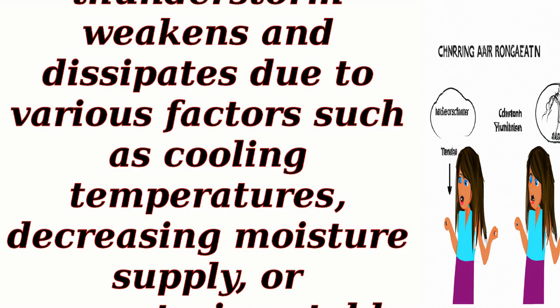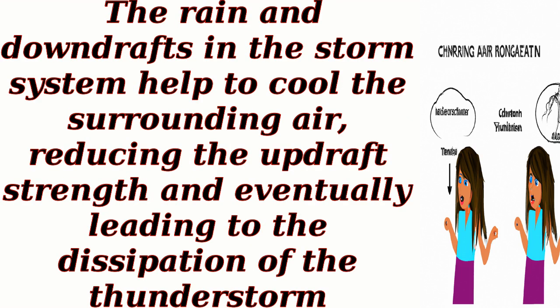Dissipation. Eventually, a thunderstorm weakens and dissipates due to various factors such as cooling temperatures, decreasing moisture supply, or encountering stable atmospheric conditions. The rain and downdrafts in the storm system help to cool the surrounding air, reducing the updraft strength and eventually leading to the dissipation of the thunderstorm.